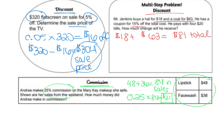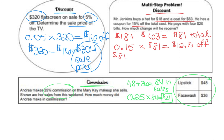He has a coupon for 15% off, so let's find the sale price. We find 15% of $81: 0.15 times $81 equals $12.15 off — writing 'off' so we remember this is the discount amount. Now find the sale price: $81 total cost minus the $12.15 discount equals $68.85 sale price.